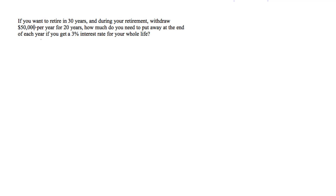Alright, here's a realistic question. If you want to retire in 30 years, and during your retirement you want to withdraw $50,000 per year for 20 years, how much do you need to put away at the end of each year if you're going to get 3% interest rate for the rest of your life so that you can pull out $50,000 per year during your retirement?